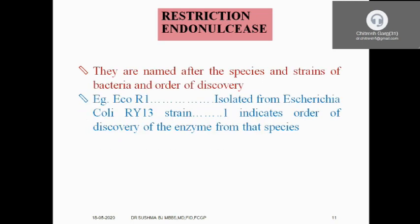How are restriction endonucleases named? Taking EcoRI as an example: 'E' and 'co' stand for Escherichia coli — the bacterial species from which it is isolated. 'R' represents the strain of bacteria — the R13 strain. '1' represents the order of discovery of the enzyme in that particular species. Thus EcoRI means: E. coli species, R strain, first enzyme discovered. This is how restriction endonucleases are labelled.